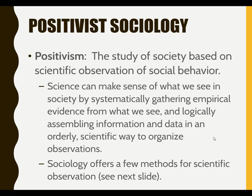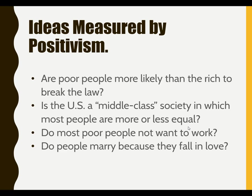So how is positivism going to observe things scientifically? What kinds of things are they going to measure and study? First: are poor people more likely than the rich to break the law? If you actually measure how many people are arrested from each social class in the United States and divide them monetarily, you find that poor people are no more likely than the rich to break the law. It's simply that some crimes committed might be more sensationalized.